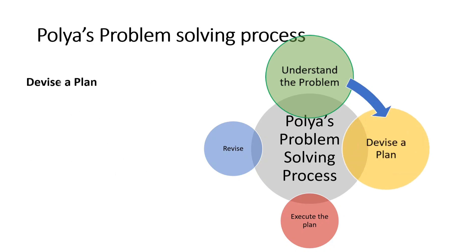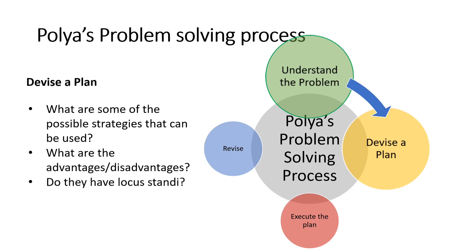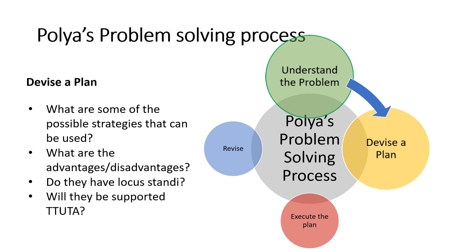The next stage is to devise a plan. Devising a plan includes finding out possible strategies or possible solutions that can be employed to solve the problem. It also includes listing the advantages or disadvantages of employing these strategies or possible solutions. Asking yourself if these strategies meet local standards is very important, because your chosen strategy or solutions must be able to withstand scrutiny in the court of law. One should also ask themselves if your chosen strategies or possible solution can be supported by your teacher's union.